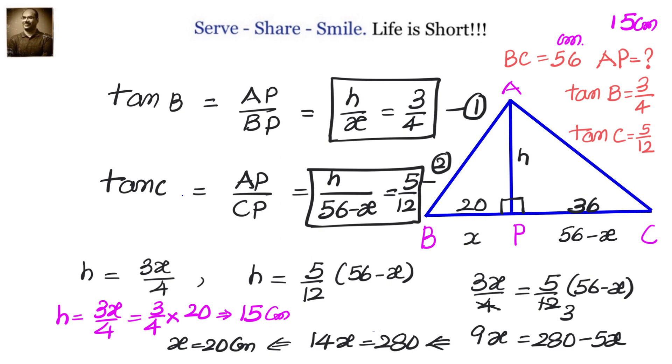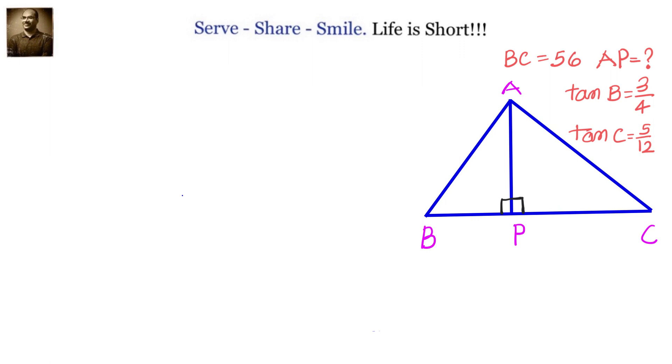This is method number one. Let's look at the second method. We have been given tan B equals 3 by 4 and tan C equals 5 by 12. Tan B equals AP by BP, tan C equals AP by CP. We know BP plus CP equals 56 centimeters.